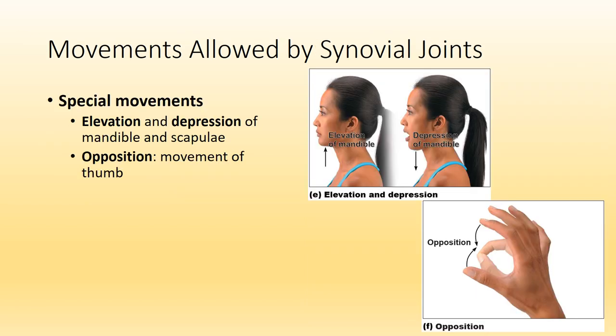Elevation and depression also occur at the mandible and scapula. Elevating your mandible would be closing your mouth, or bringing your mandible up towards your maxilla. Depression would be dropping your mandible. With the scapula, think about bringing your shoulders up towards your ears as if shrugging — that is scapular elevation. Pushing your shoulders towards the floor or away from your ears is depression. Lastly, as humans we have opposable thumbs — if you take your thumb and touch the tip to the other four fingers, that is opposition.